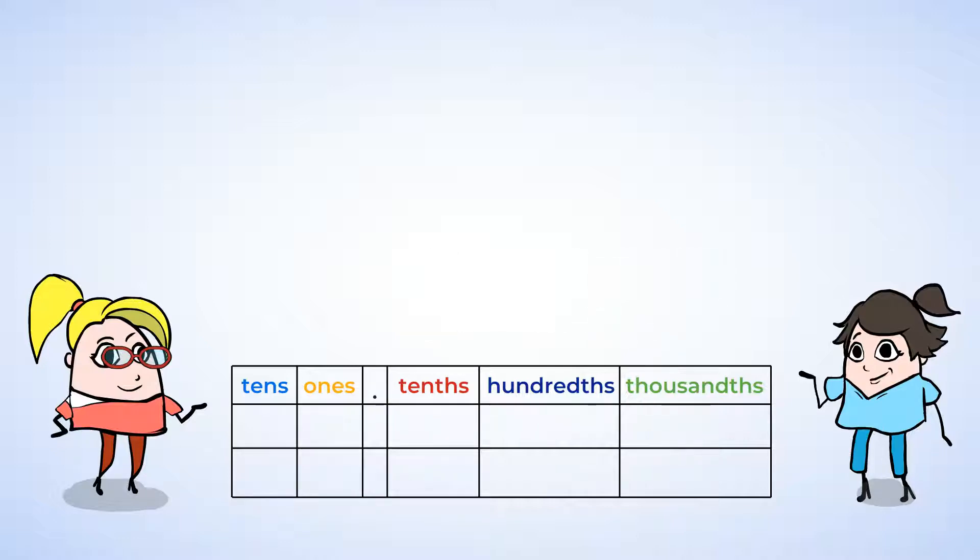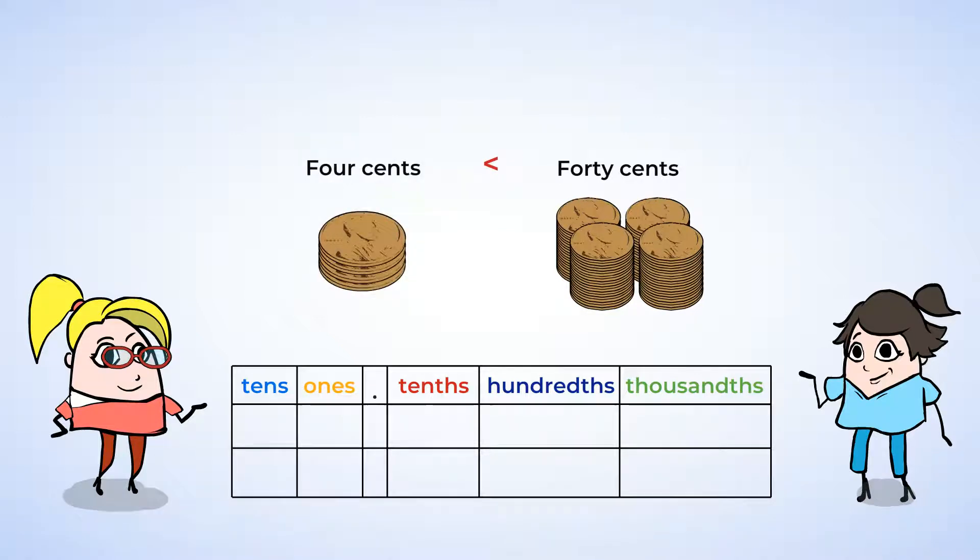It's like coins. Is forty cents more than four cents? It sure is. And how do we write forty cents and four cents as decimals? Like this. Point four for forty cents and point zero four for four cents. That's right. When the four is in the hundredths place, it has a smaller place value than when it's in the tenths place.